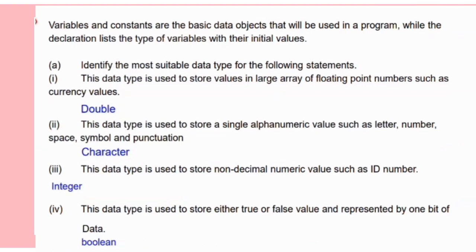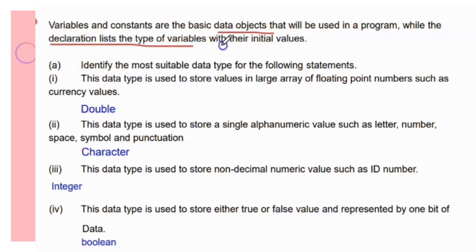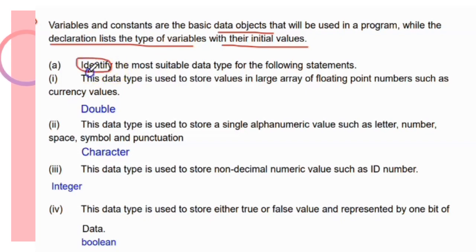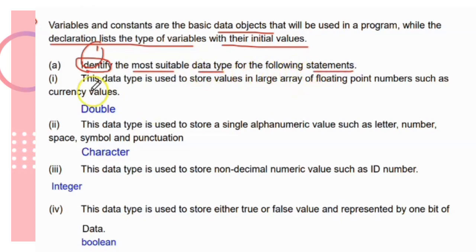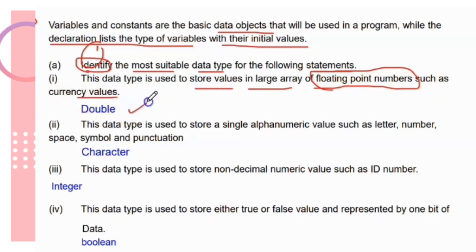Variables and constants are the basic data objects used in a program, while the declaration lists the types of variables with their initial values. Identify the most suitable data type for the following statements — you must underline the keyword.